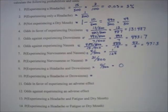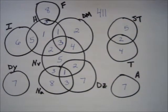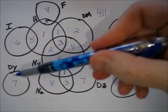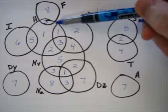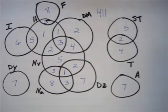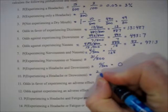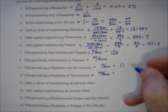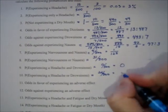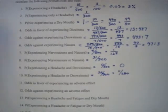Problem 10: probability of experiencing a headache or drowsiness. This is a union statement — we get everybody in drowsy as well as everybody in headache. That's 22 people total, so it's 22 out of 500, which reduces to 11 out of 250.